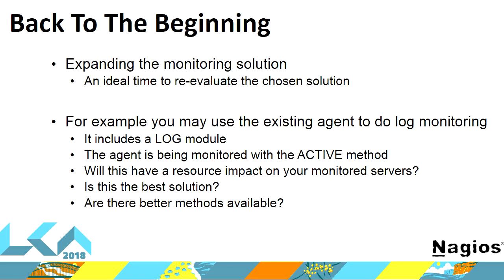Going back to that original solution — once everything was running and everyone was happy, people start to look at other things they can do. They might say, let's look at doing some log monitoring using the agent's log module. They play around with it, it works. But in this scenario they were using the active method — the monitoring system was polling the agent, which was querying the logs on the server every five minutes, potentially adding CPU or I/O load. That might not be the best solution. The point is: while you might have implemented a monitoring solution and chosen your approach, when you go to do new things, stop and re-evaluate. Are there better methods available?